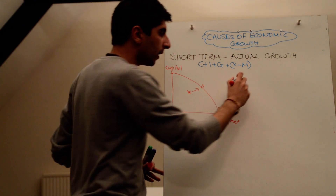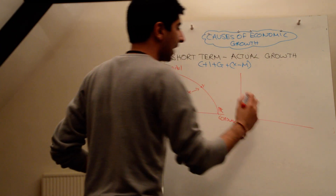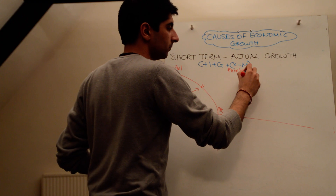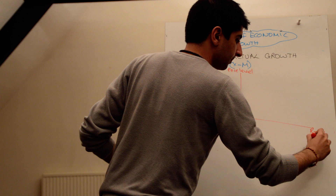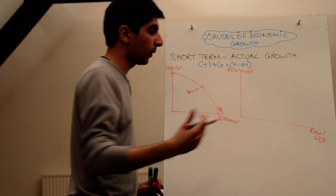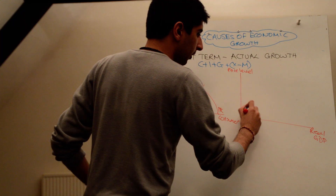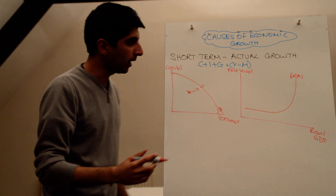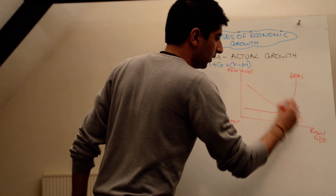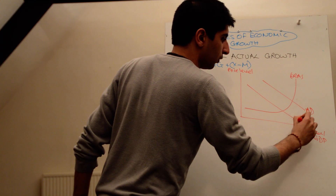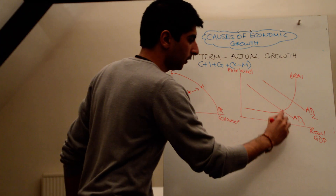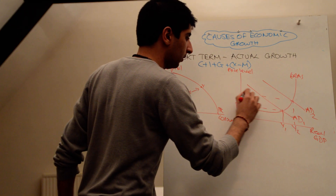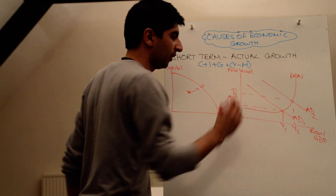On a diagram, an increase in aggregate demand is shown with the price level on the vertical axis and real GDP on the horizontal axis. We have our aggregate supply, and aggregate demand shifts to the right from AD1 to AD2. As a result, the level of growth increases in the economy from Y1 to Y2, and there is demand-pull inflationary pressure from P1 to P2.